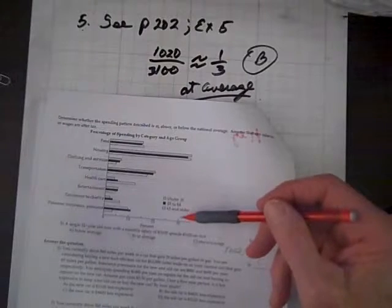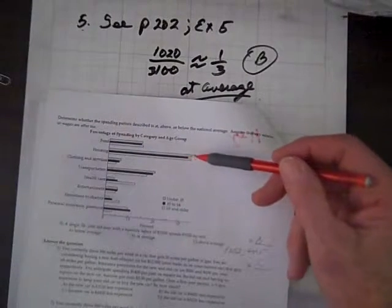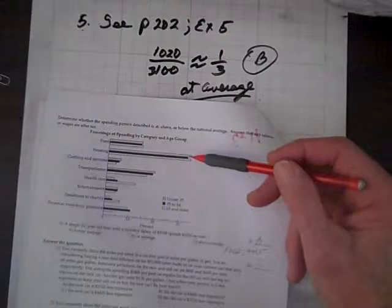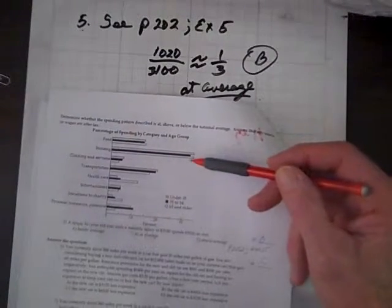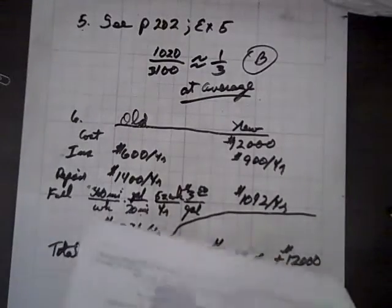And notice, the average rent is, here's our chart, here's 30%, and the average rent is just a little over 30%, about 33%. So he's in the ballpark on that. He's at average.